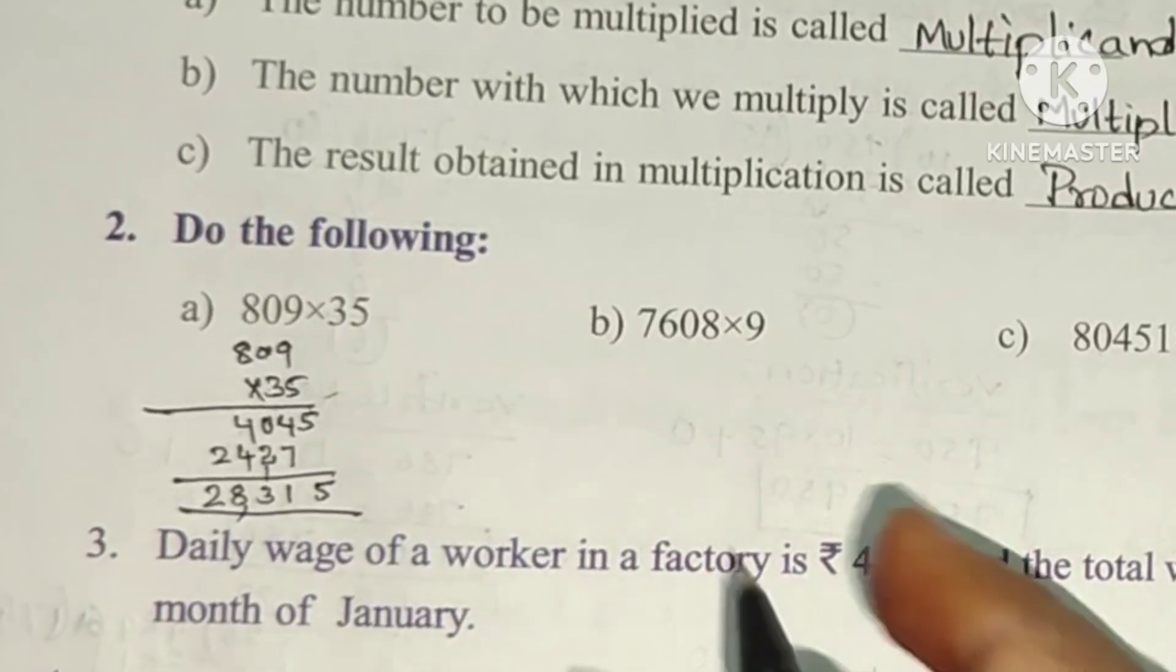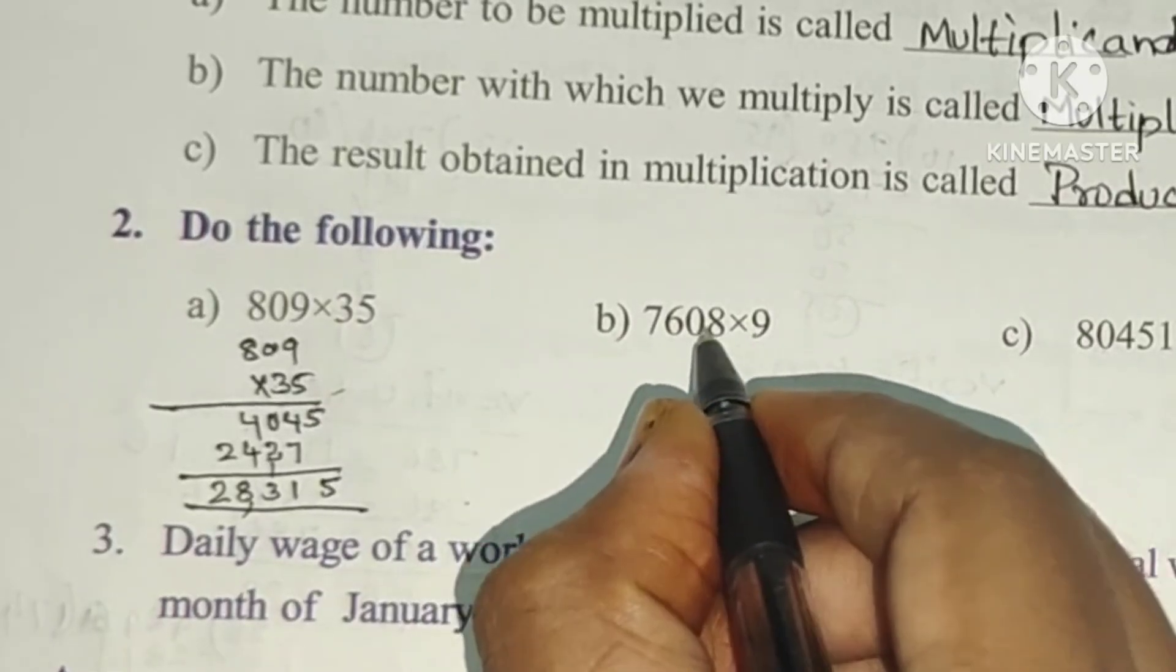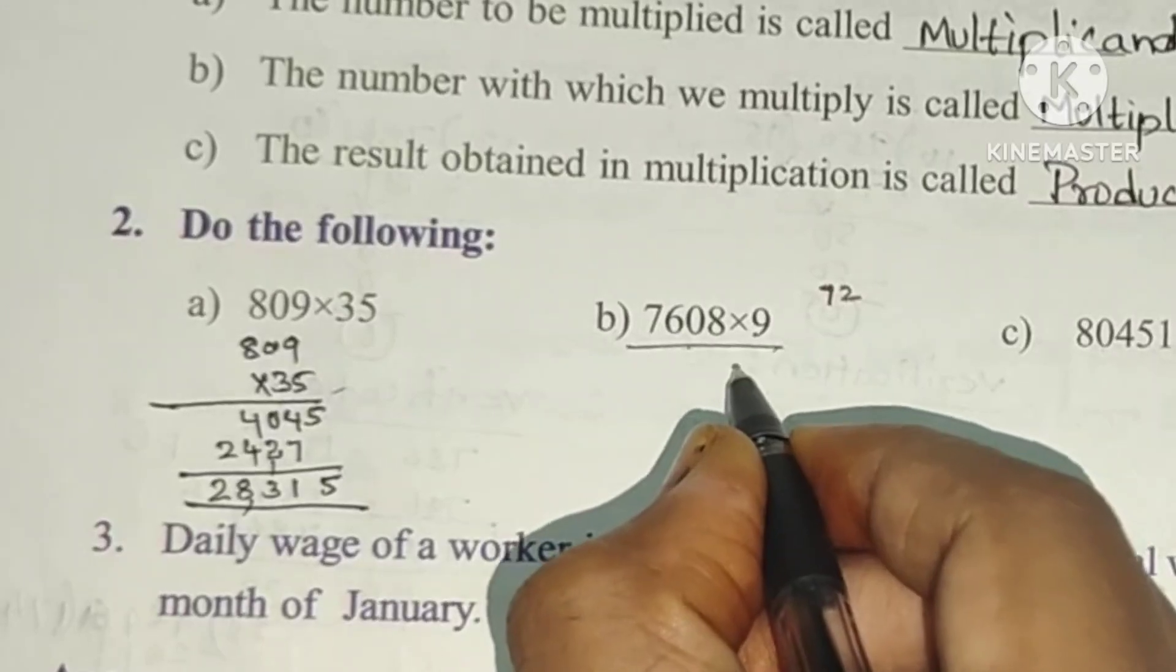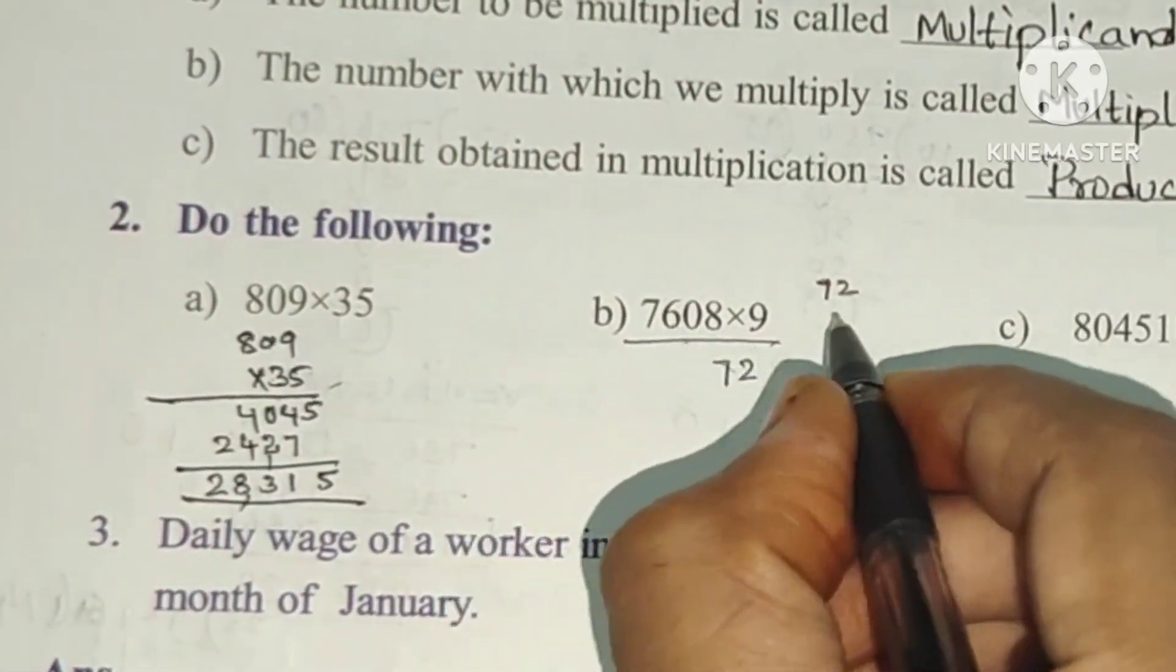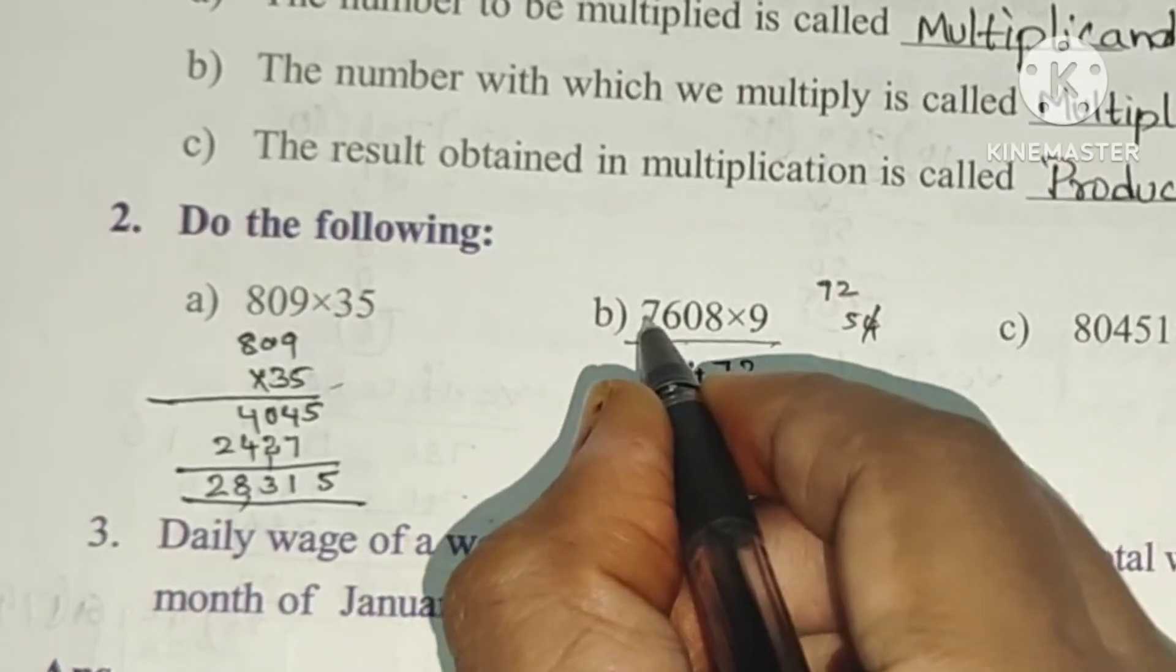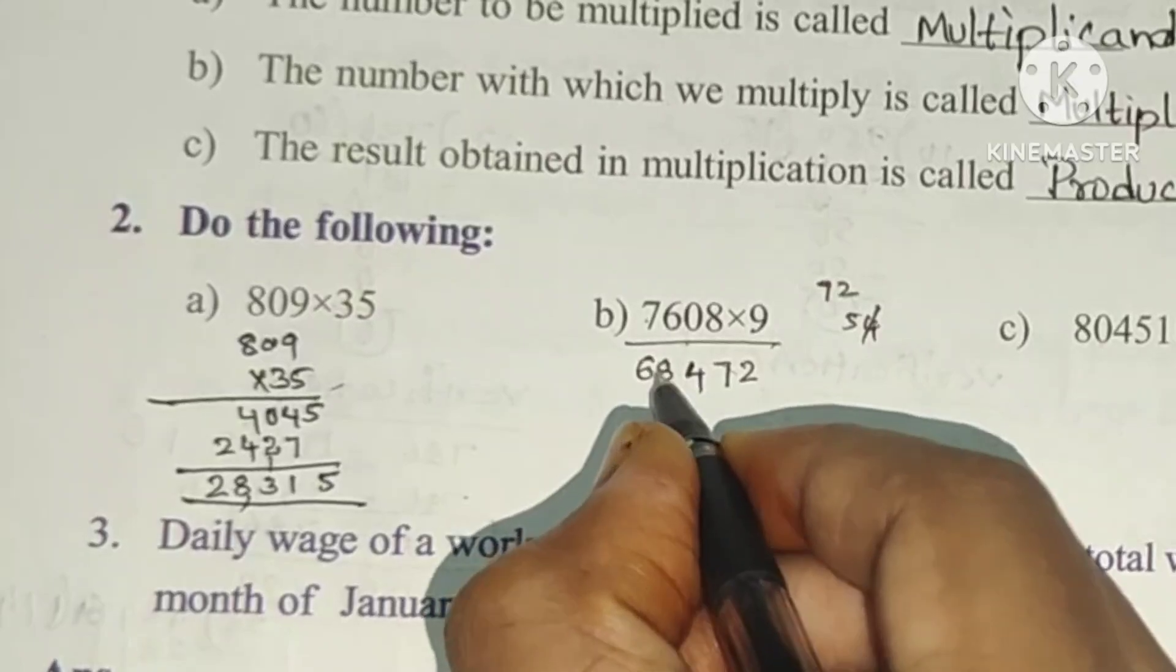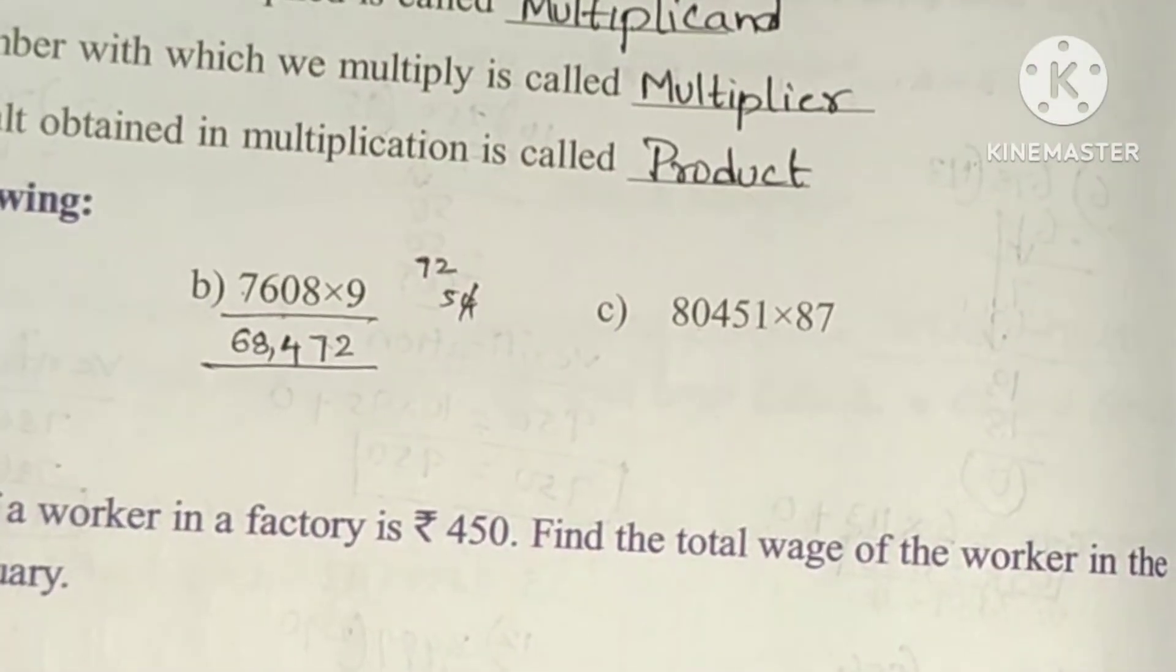Next, 7608 into 9. 9 times 8 is 72, write 2. 9 times 0 is 0. 9 times 6 is 54, write 4. 9 times 7 is 63 plus 5 is 68. So the answer is 68,472.